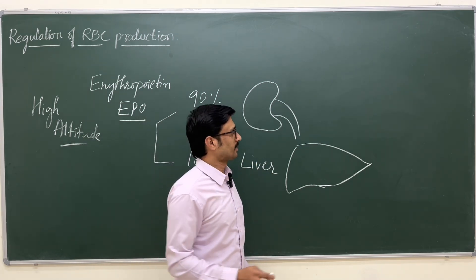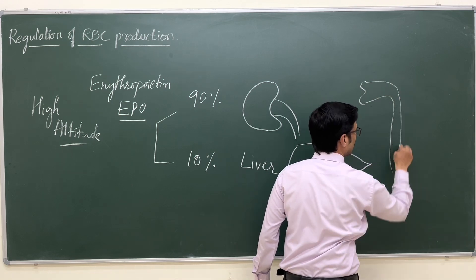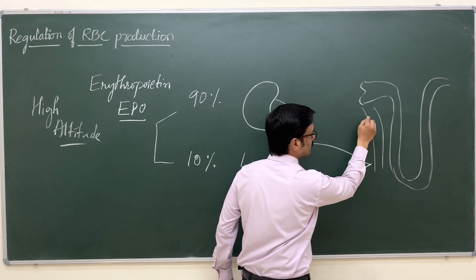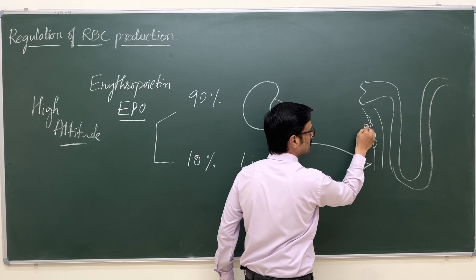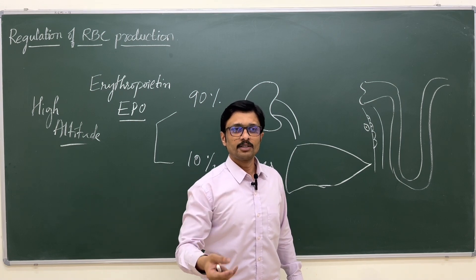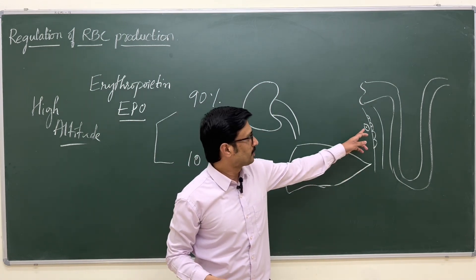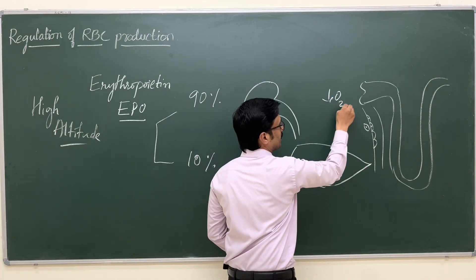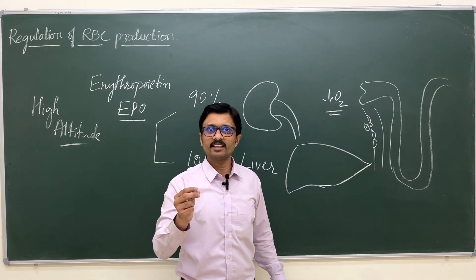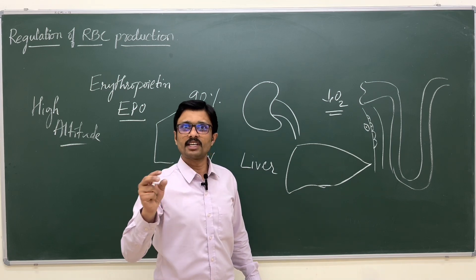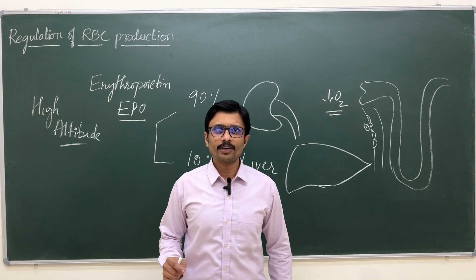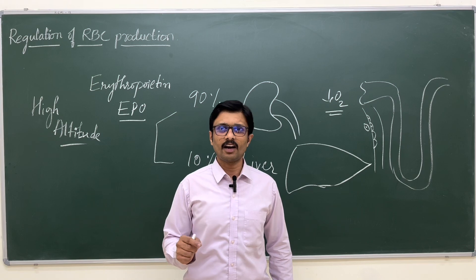The cells within the kidneys that secrete erythropoietin are the peritubular capillary cells. The nephron is surrounded by capillaries lined by endothelial cells, along with interstitial cells. These interstitial cells and endothelial cells of the peritubular capillaries secrete erythropoietin. The major stimulus for this secretion is decreased oxygen content — whenever there is renal hypoxia, these cells sense the decreased oxygen levels and secrete more erythropoietin.